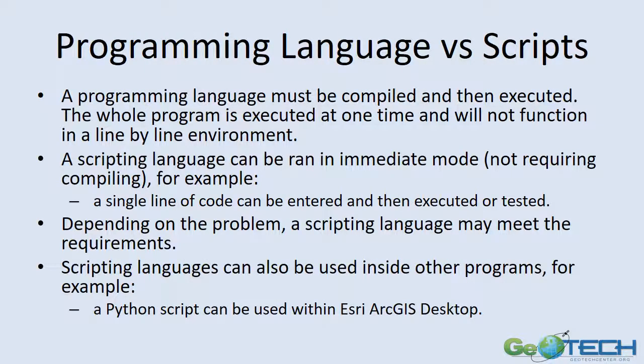You'll see the word scripting used and the word programming language used, and they both have similar functionality. The biggest difference is that with a programming language, you must compile the language into a set of executable code before it can be run to see if things are working properly. Generally with a scripting language, you can write a line of code, press enter, and see if that line of code is functioning properly, allowing line-by-line execution. The word code is the same as a language or scripting language.